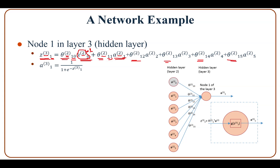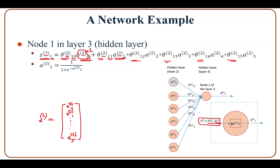In vector form, z³₁ = theta²₁ transpose times a², where a² is the output vector at layer two.